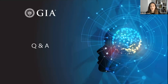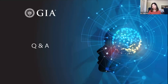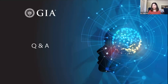Are the updated diamond and colored stone courses currently available for enrollment? The updated color stone course is now available — if you are enrolling in the Graduate Colored Stone program, you will use the new set of textbooks shown in this presentation. For the diamond course, you will probably still have to wait another year for the new textbooks to come out — looking at the end of 2021 or the beginning of 2022 for the new courses to come out.